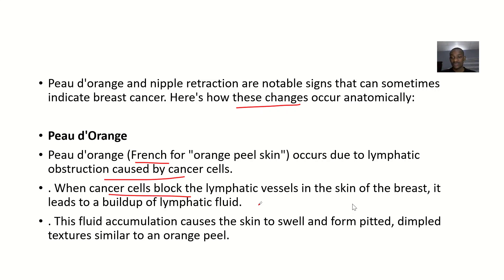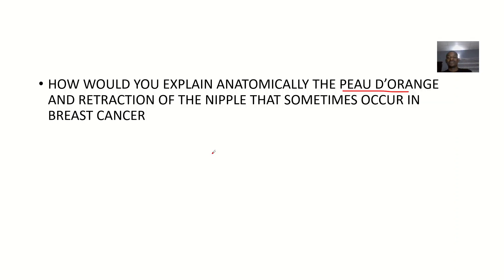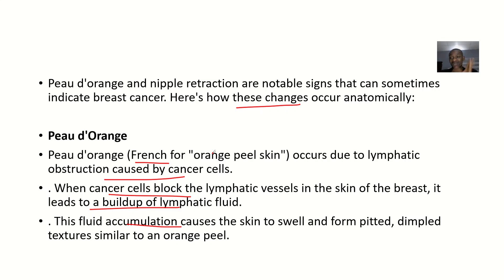When cancer cells block the lymphatic vessels in the skin of the breast, it leads to a build-up of lymphatic fluid. The lymphatic fluids are unable to flow freely, so there's a hold-back. This fluid accumulation causes the skin to swell and form pitted, dimpled textures similar to an orange peel — small pits all around. The breast is no longer smooth; it looks like the skin of an orange. This is due to lymphatic obstruction — that is the anatomical reason.